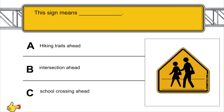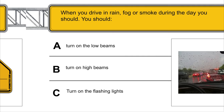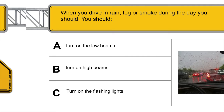This sign means school crossing ahead. When you drive in rain, fog, or smoke during the day, you should turn on the low beams.